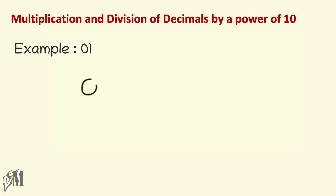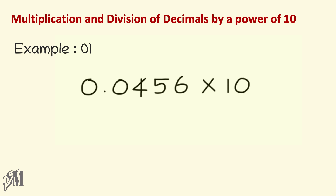Now let's pay attention to multiplication and division of decimals by powers of 10. The first example is 0.0456 multiplied by 10. When multiplying any decimal number by a power of 10, we move the decimal point to the right. Since 10 has only one zero, we move the decimal point once, giving the answer 0.456.